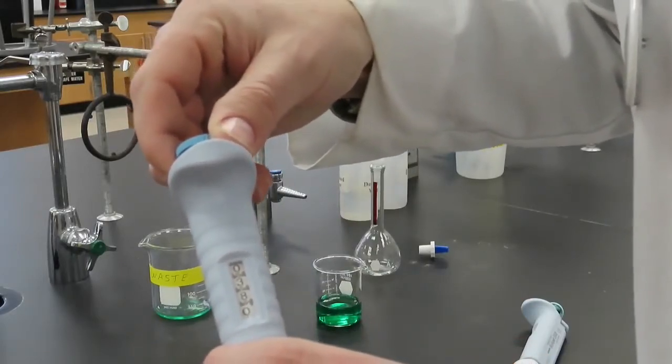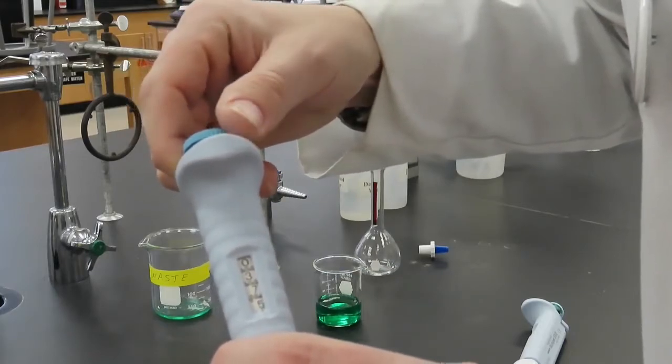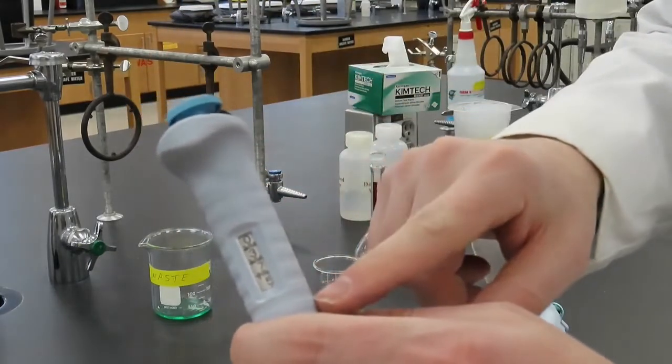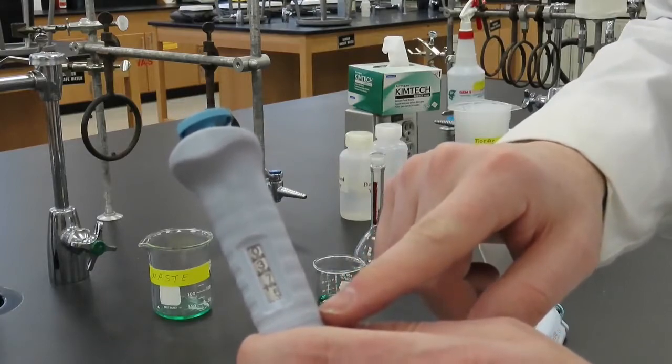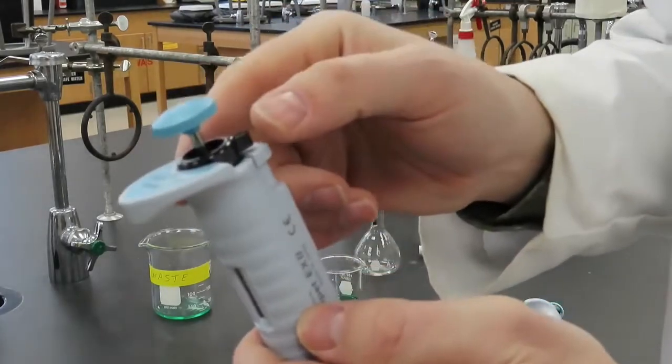Finally, we set it at 376 microliters. If this is the volume we want, we then lock the volume locking ring and continue.